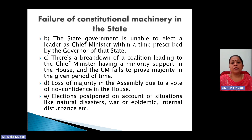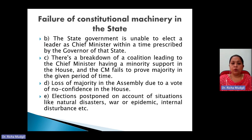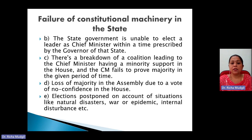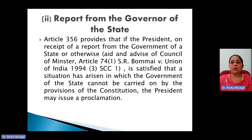Further situations include loss of majority in the assembly due to a vote of no confidence motion — as seen in many states in recent times — and when elections are postponed on account of situations like natural disasters, war, pandemic, or some kind of internal disturbance in the state. These are the situations where a constitutional crisis arises in the state.